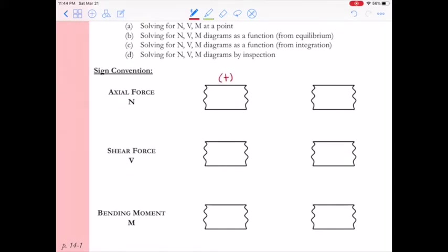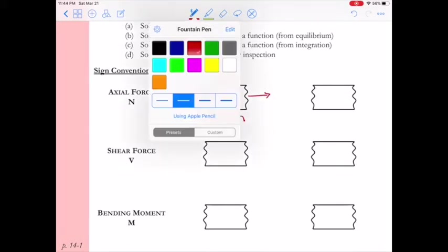Our positive axial force we know is tension, and we express tension as acting away from the cut. So here we have an arrow acting away from the surface of our cut on either side.